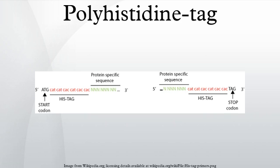Nickel and cobalt have similar properties as adjacent period-four transition metals. These resins are generally Sepharose agarose functionalized with a chelator, such as iminodiacetic acid and nitrilotriacetic acid for nickel, and carboxymethylaspartate for cobalt, which the polyhistidine tag binds with micromolar affinity. The resin is then washed with phosphate buffer to remove proteins that do not specifically interact with the cobalt or nickel ion. With nickel-based methods, washing efficiency can be improved by the addition of 20 mM imidazole. Generally, nickel-based resins have higher binding capacity, while cobalt-based resins offer the highest purity.